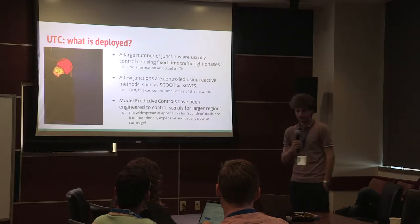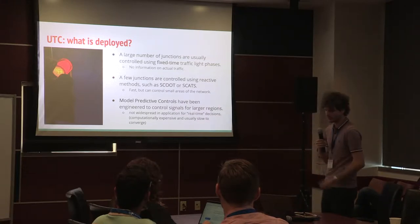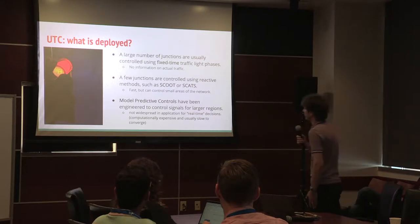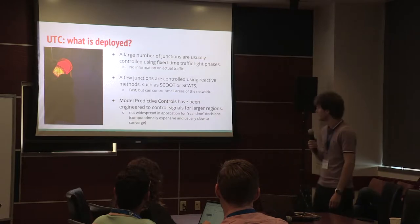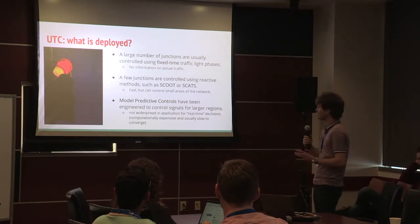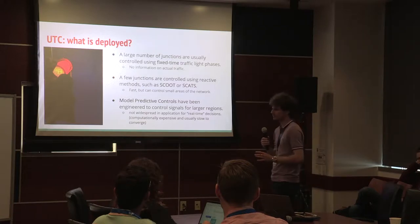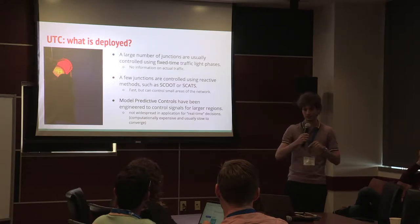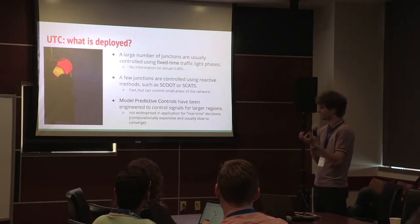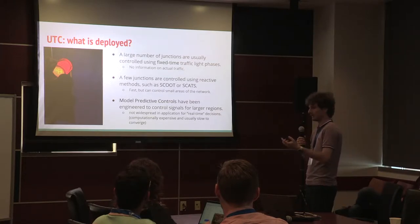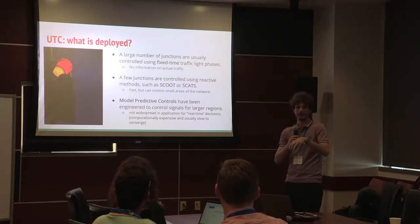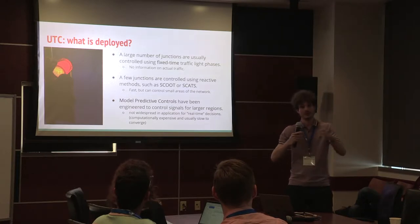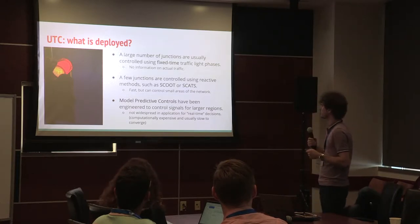A few connected junctions can be controlled using techniques called SCOOT or SCATS, which came from the 1980s — and we're still using that technology. They're fast for controlling a small number of junctions, up to seven or eight in SCOOT's case, and can work well for that small area. But they don't know anything about the rest of the area, so they can improve conditions in the control area and make it much worse just outside. If you're a traffic authority controlling the whole city, you don't really like that.